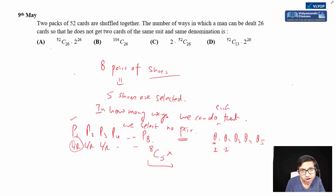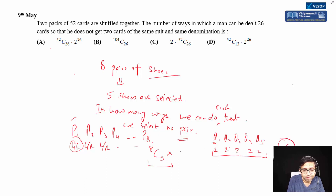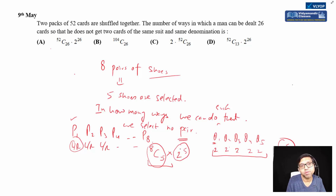From pair Q1 we can choose either left or right shoe — two ways. Same for Q2, two ways. For each of the five selected pairs, there are two ways to pick a shoe, so by the fundamental principle of counting, total ways = 8C5 × 2^5.